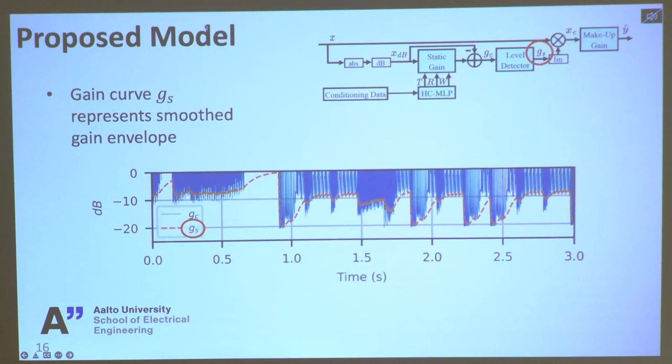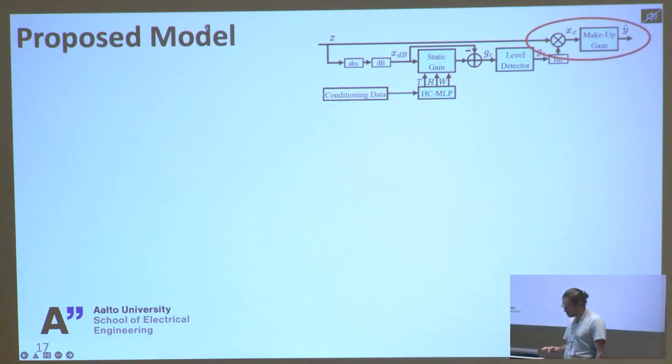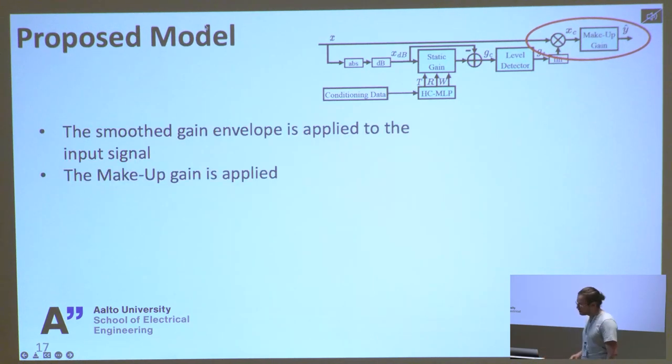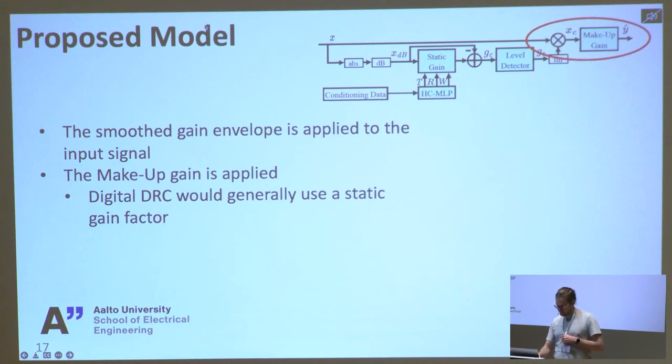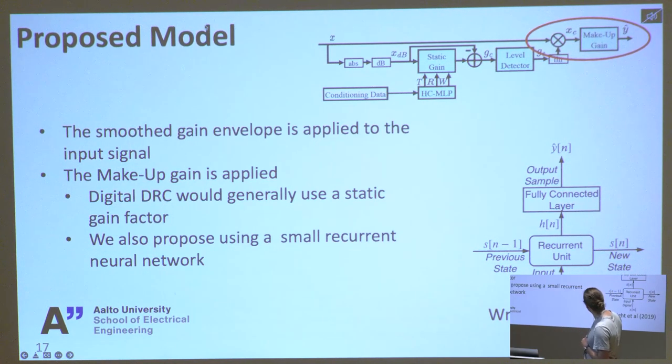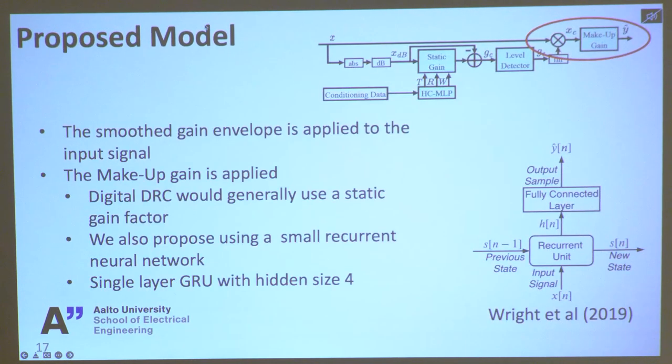Now we have a gain curve which is ready to be applied to the output signal. The signal will finally go through this makeup gain phase. Usually, a makeup gain in a digital compressor would be just a static gain. However, in a real analog compressor, you would probably have something like a makeup gain tube amplifier. What we propose is to replace this makeup gain with a small recurrent neural network based on a previous model we've used for guitar amplifier modeling. Now there's a little black box at the end of the model, but it's really little. It just has a single layer GRU with a hidden size of four, so it's not too expensive.